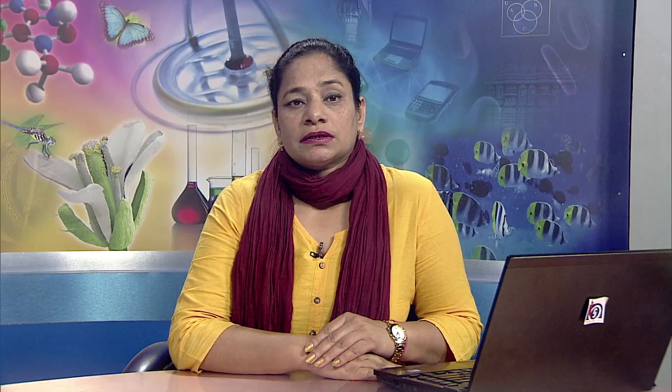Types of soil erosion can be classified on the basis of the physical agent responsible for erosion. The various types are broadly referred to as water erosion and wind erosion. Water erosion occurs by means of raindrops, waves or ice, and is termed differently according to the intensity and nature of erosion. Water erosion can occur due to raindrop, sheet, rill, stream bank, landslide and coastal erosion.